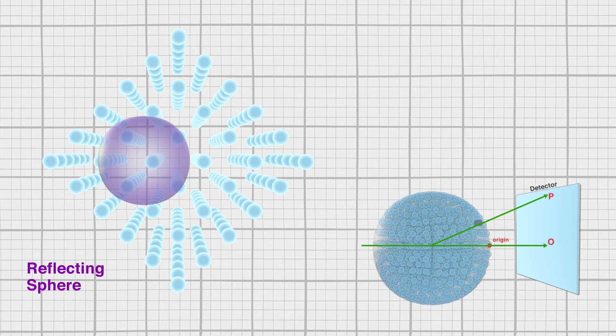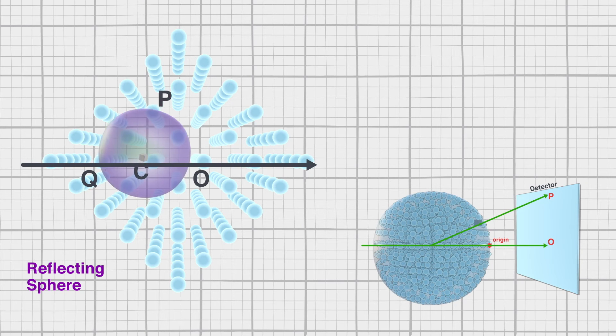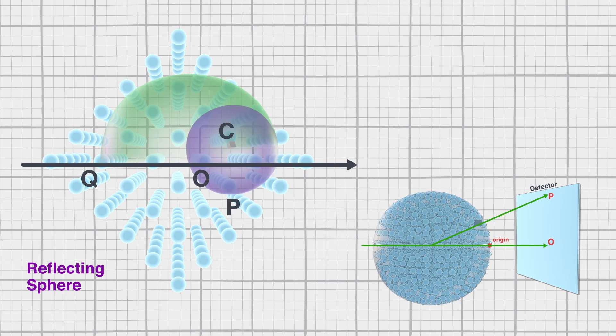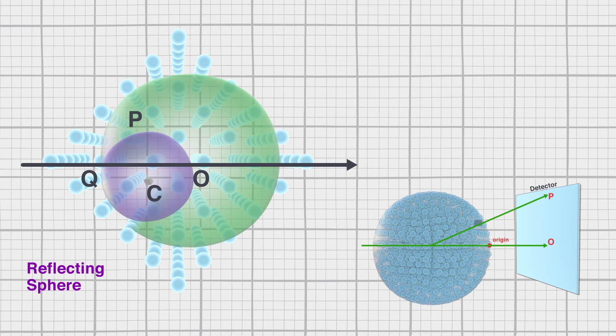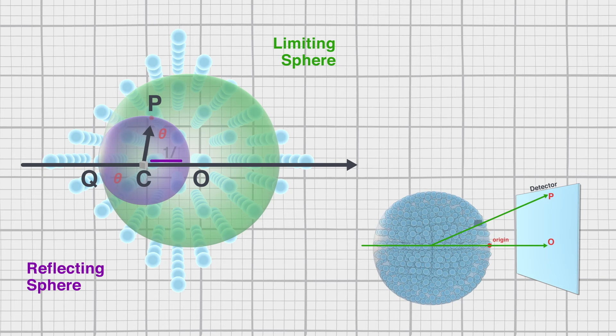If we rotate the reflecting sphere around point O, which is the same as rotating our crystal, we can draw another sphere. This second sphere is the limiting sphere. With a radius of 2 over lambda, any reflections beyond this sphere are not accessible with this wavelength.